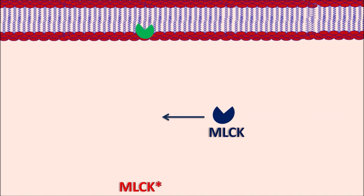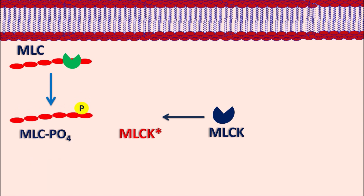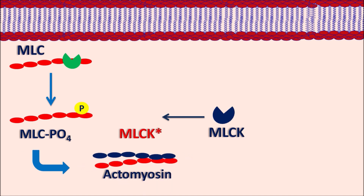In the corpus cavernosum, the contraction of the smooth muscle is mainly controlled by one of the enzymes, MLCK — myosin light chain kinase — which is a phosphorylating enzyme. MLCK is converted into its active form, which can then act on MLC (myosin light chains). It phosphorylates MLC such that MLC is converted into MLC phosphate. This MLC phosphate then forms a complex with actin, creating an actomyosin complex, which slides to produce contraction of the smooth muscle.